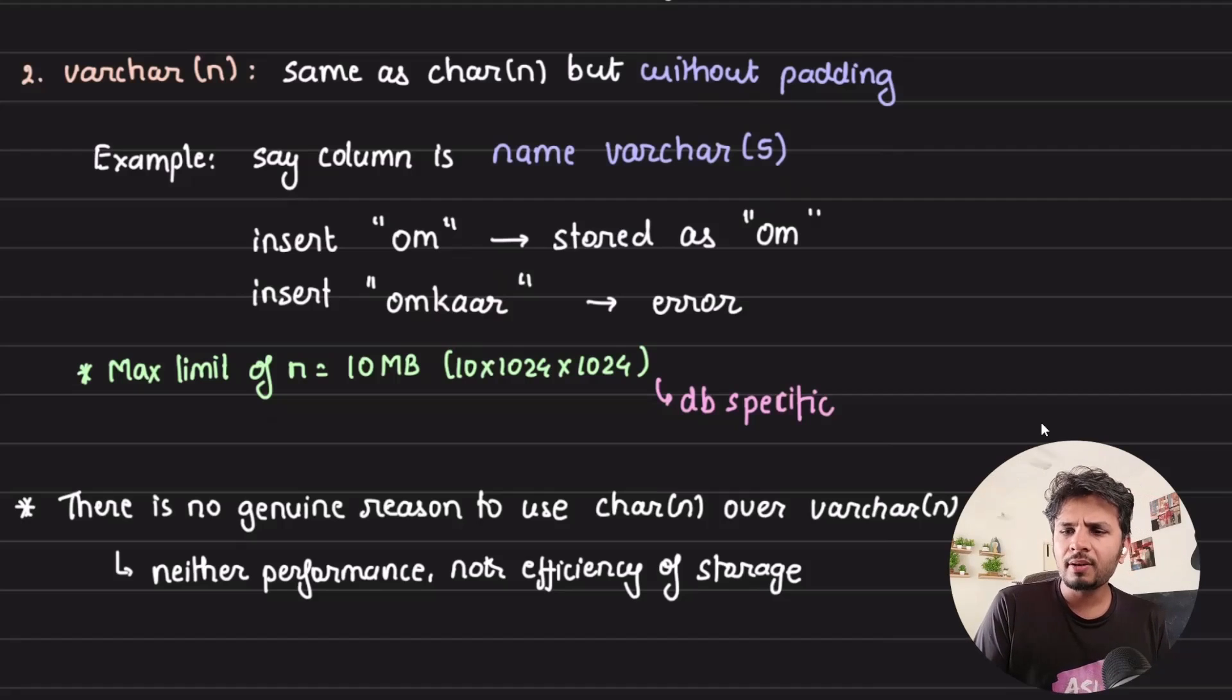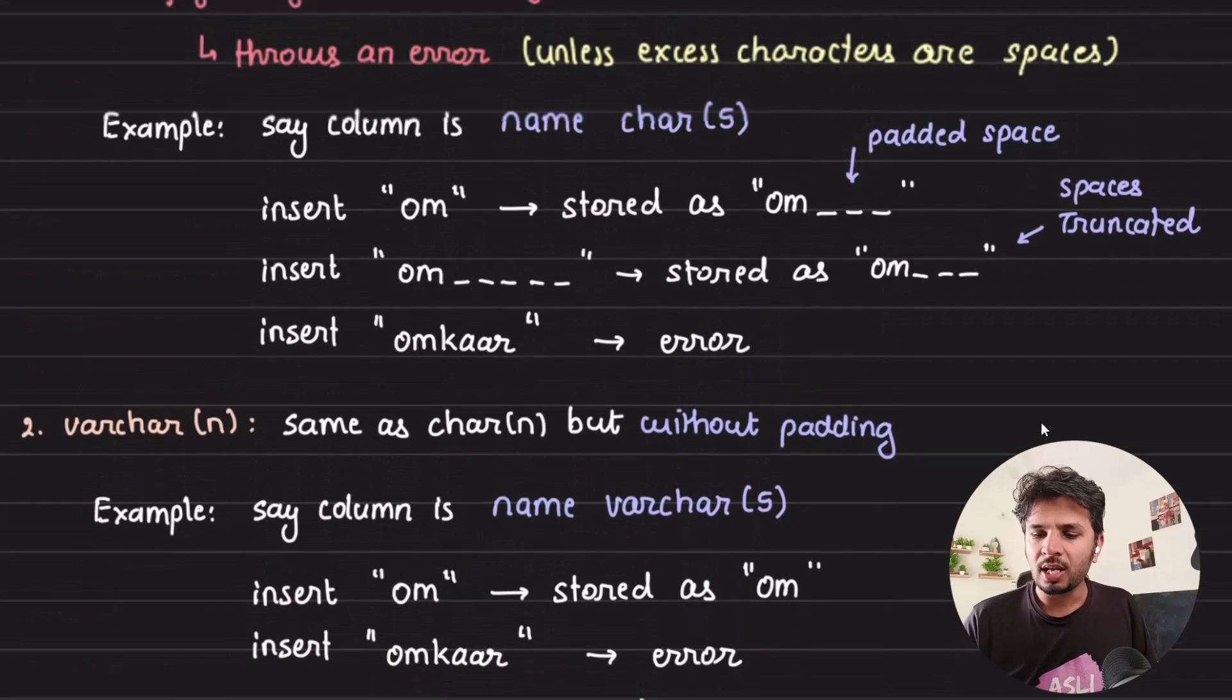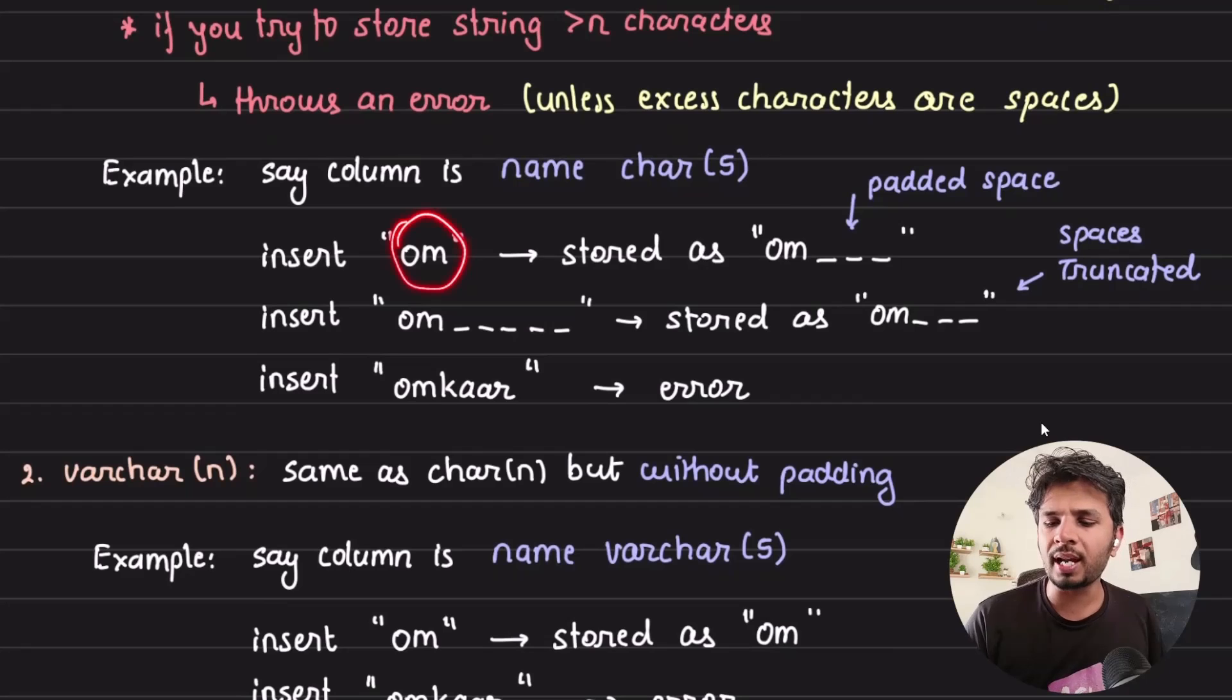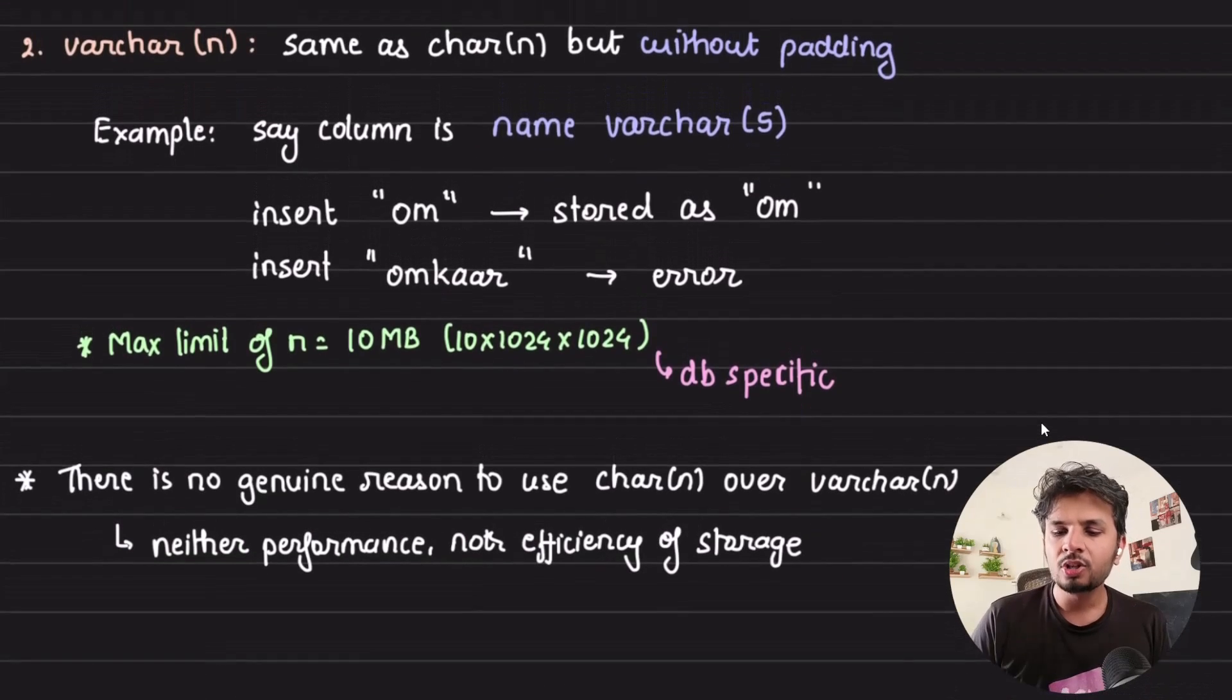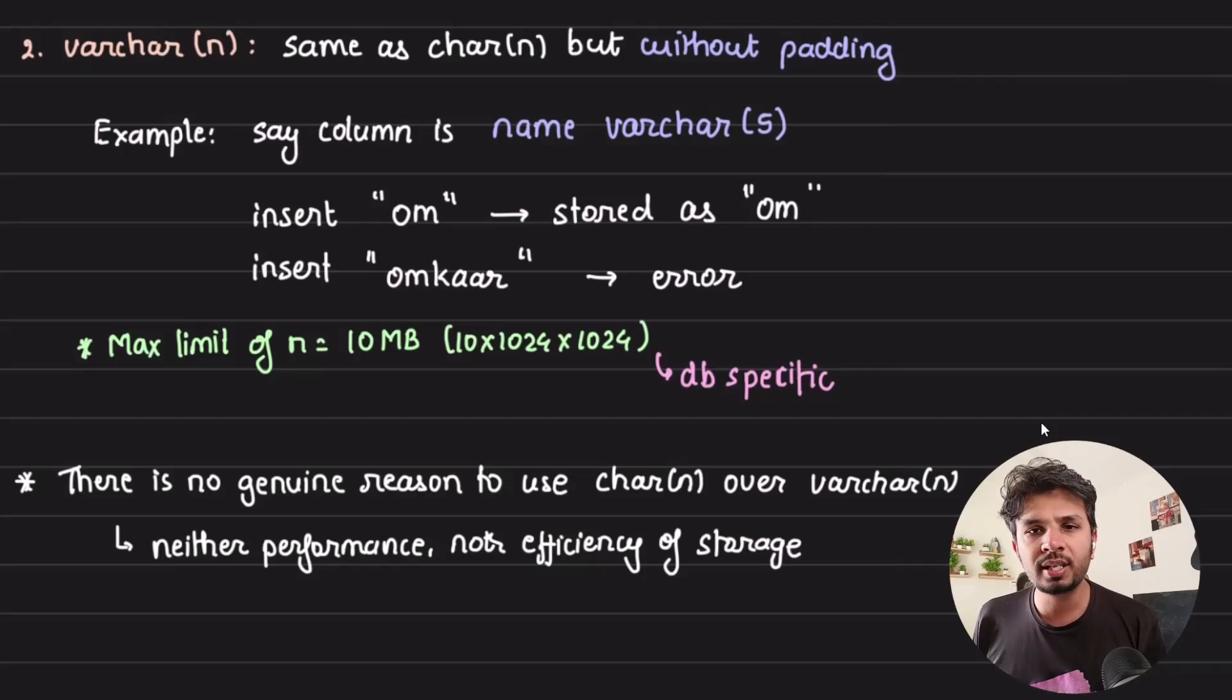For Postgres it is 10MB, for MySQL it is 65KB, again configurable, so I would highly recommend going through the database documentation. If you compare these two closely, there is no genuine reason to use char over varchar because you get neither performance benefit nor storage efficiency. That's why for most real-world use cases you gravitate towards using varchar more than char.